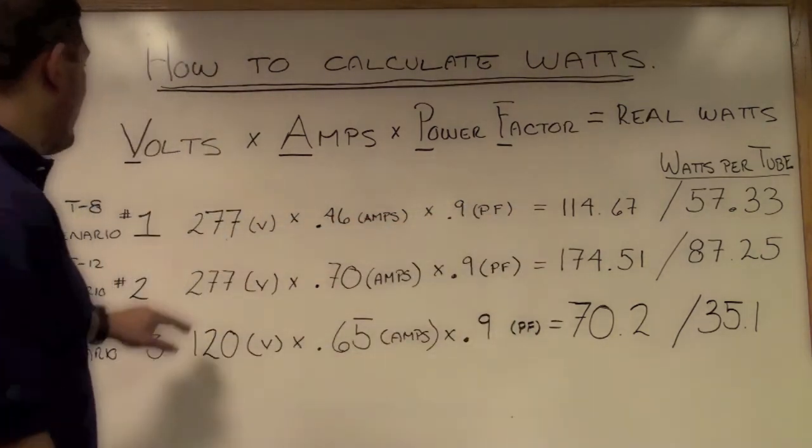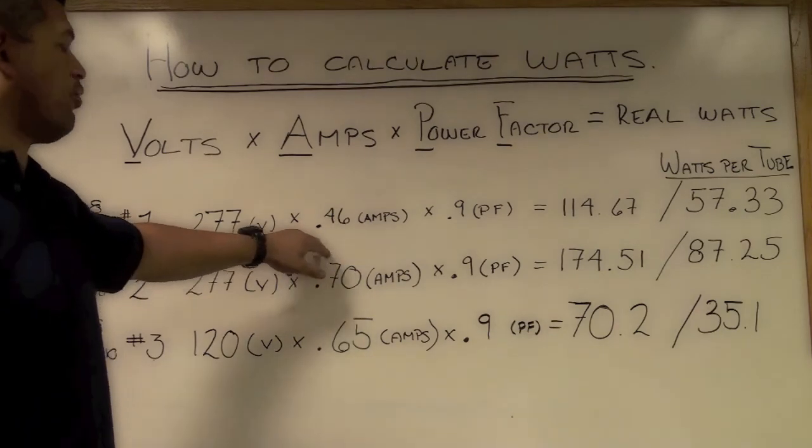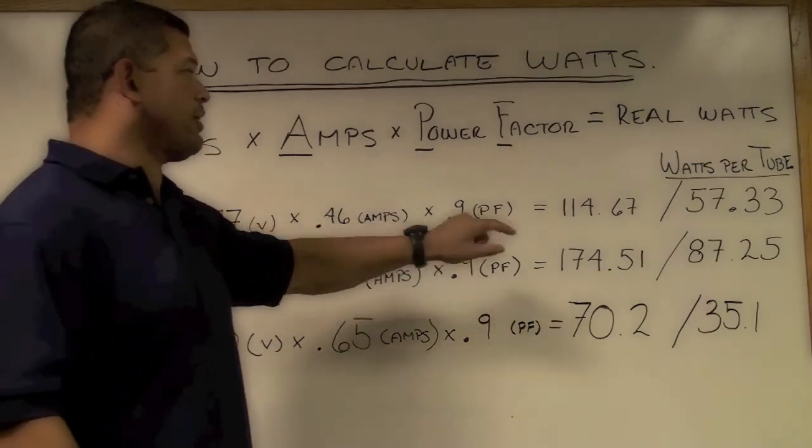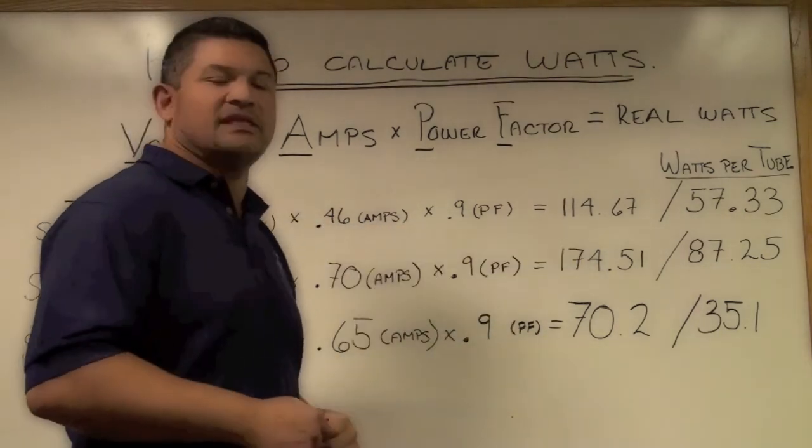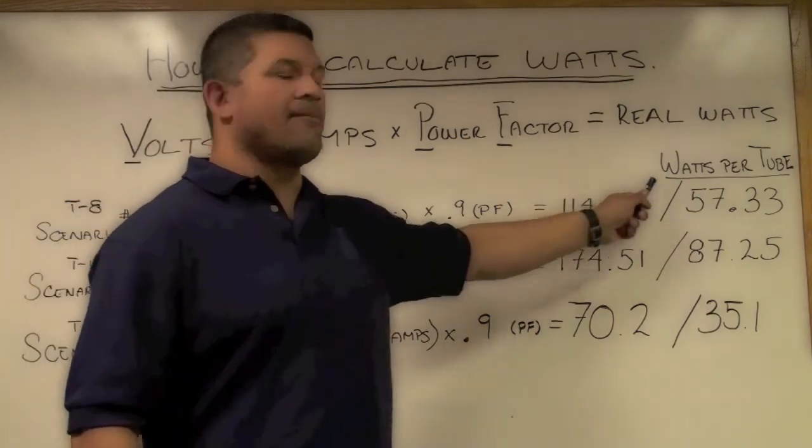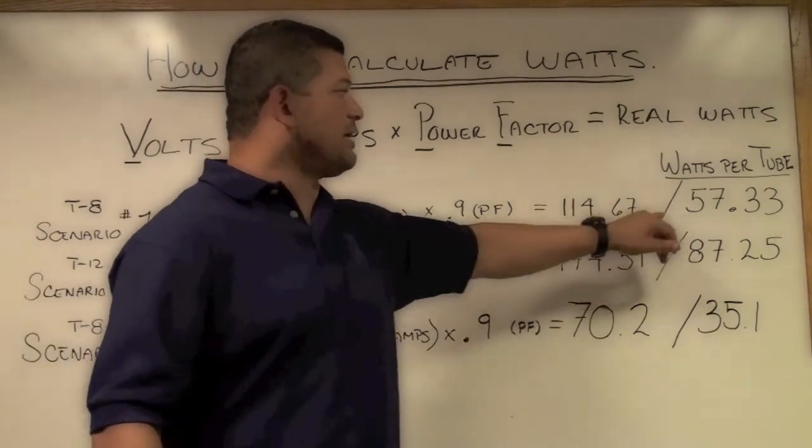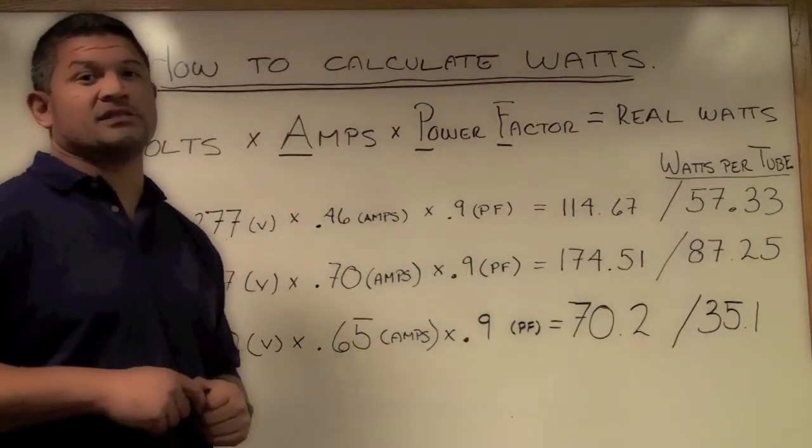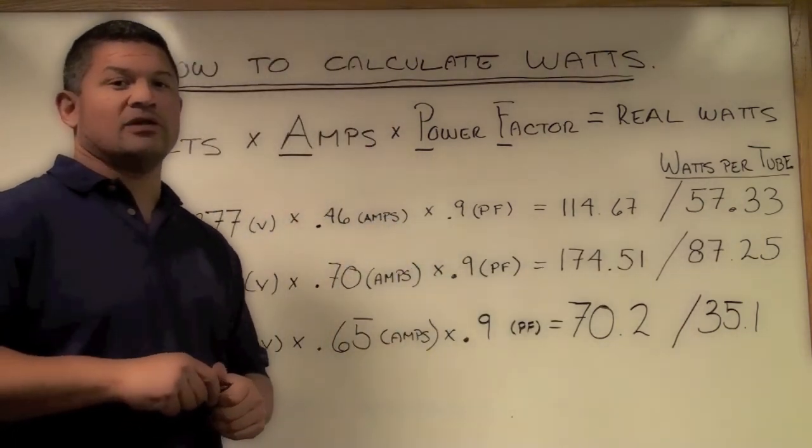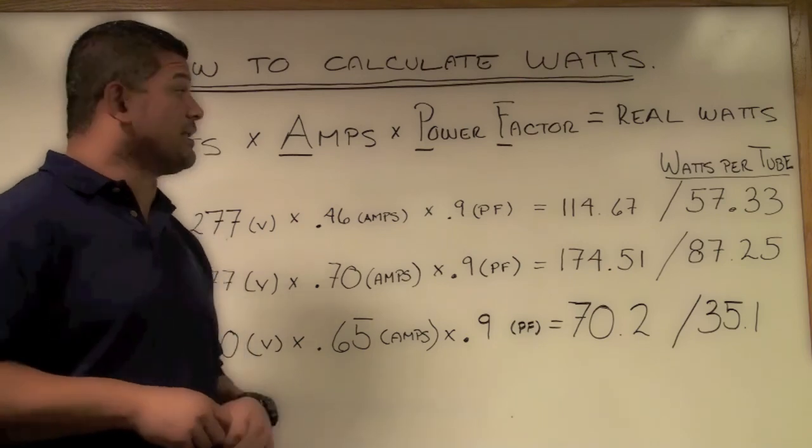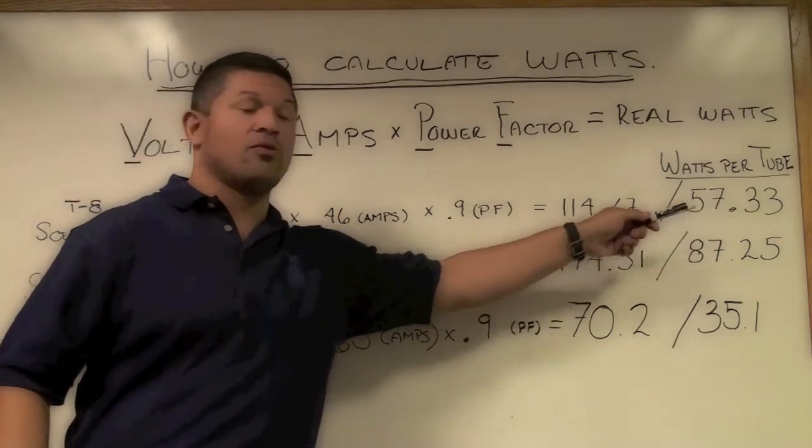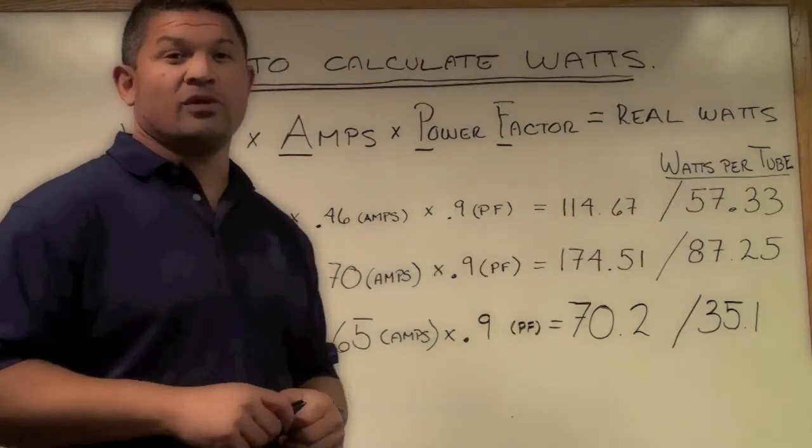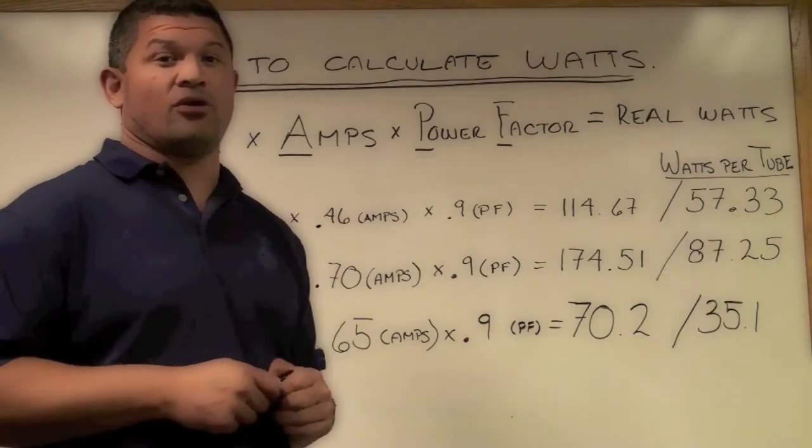In this calculation we have 277 times 0.46 times 0.9 which comes out to 114.67. You divide that by the number of lamps which comes out to 57.33. Those are the total watts consumed and we're looking at retrofitting our location to basically having a solution with LED lights retrofit which would be only 30 watts per lamp.